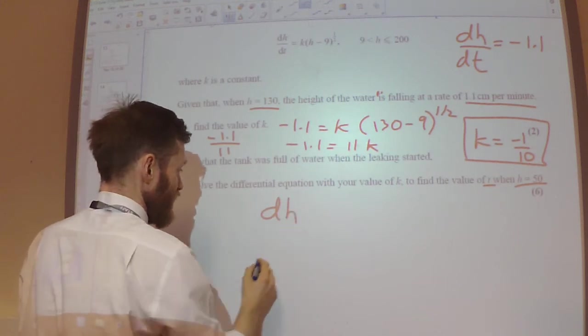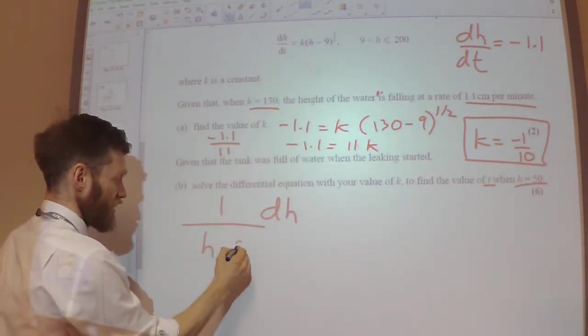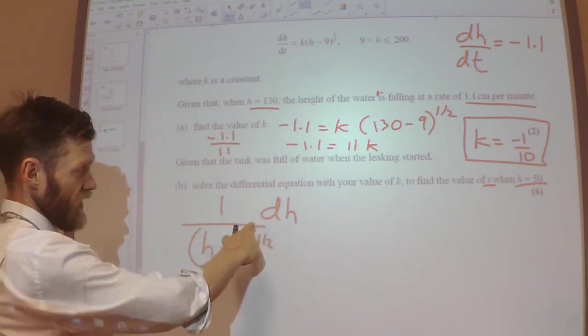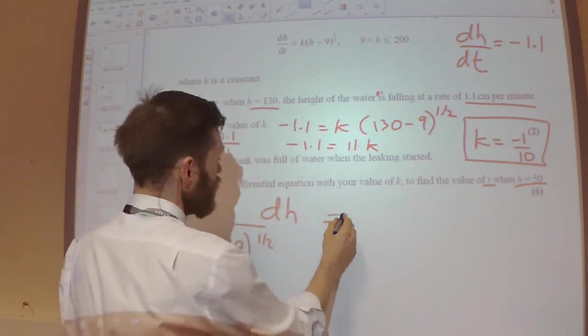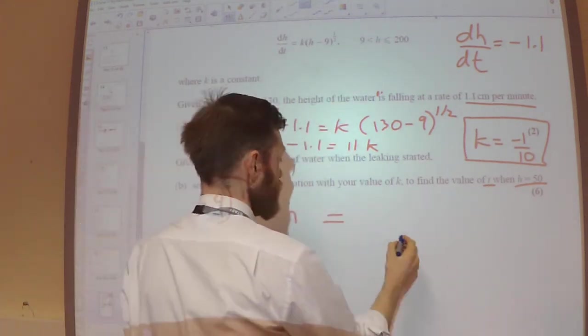Leave the DH where it is. Move the H minus 9 to the power of one half over to the left-hand side so it's with the H. Move the DT up to the right-hand side.